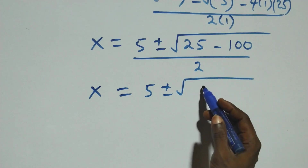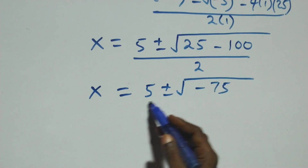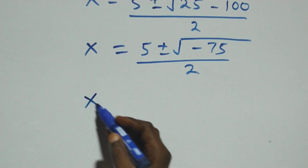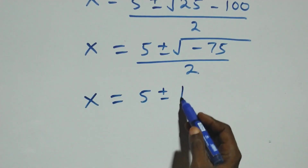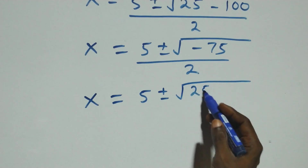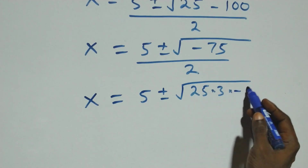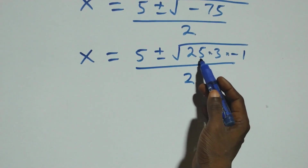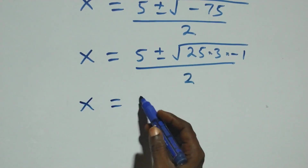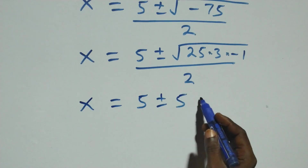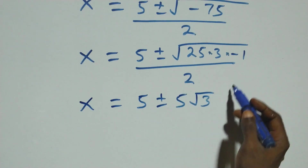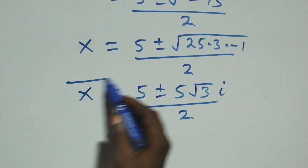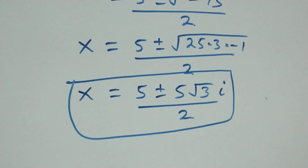Twenty-five minus one hundred gives negative seventy-five, all over two. This can be written as x equals (5 ± √(25 × 3 × −1)) / 2. Separating √25 as 5, we get x equals (5 ± 5√3 · i) / 2. Here √(−1) is i, so we have two complex solutions from this case.